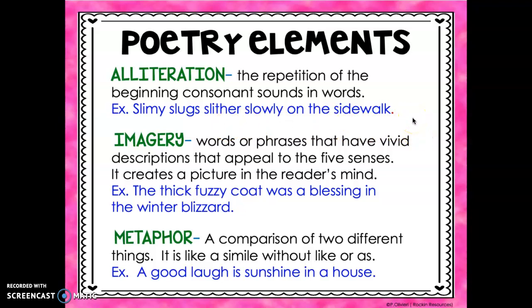Our next element is imagery. With imagery, you'll find words or phrases that have vivid descriptions that appeal to the five senses. It creates a picture in the reader's mind. When we think about our five senses, we're thinking about how the writing makes us visualize something — words or phrases describing what we see, hear, smell, taste, or touch.